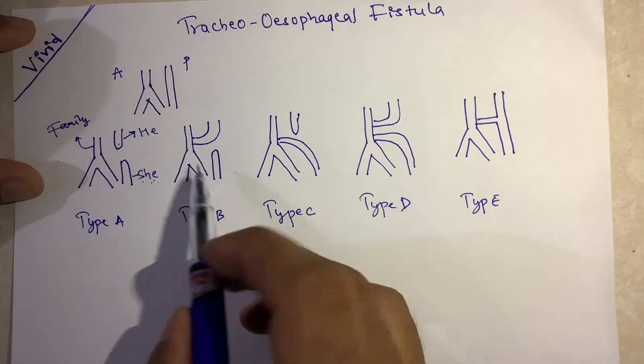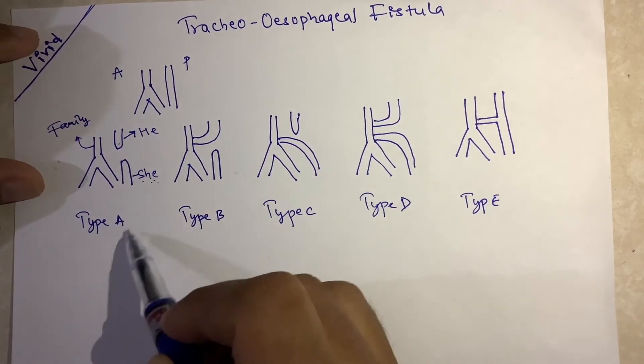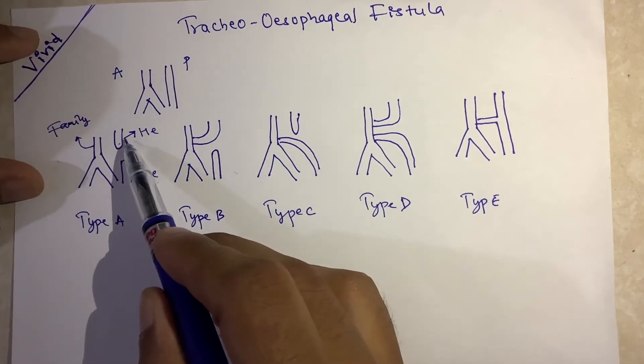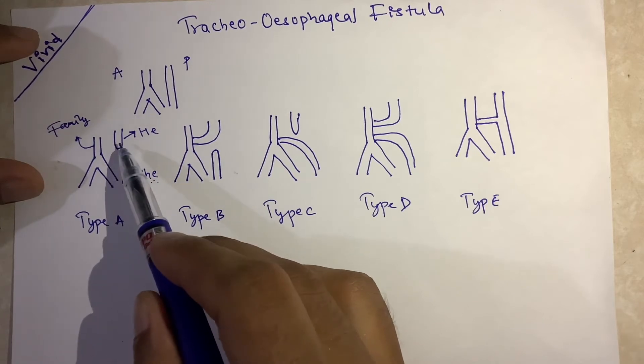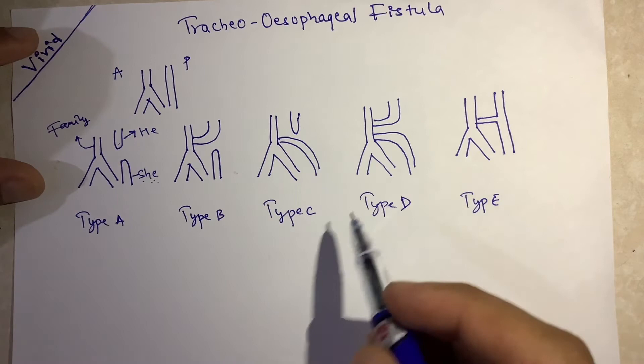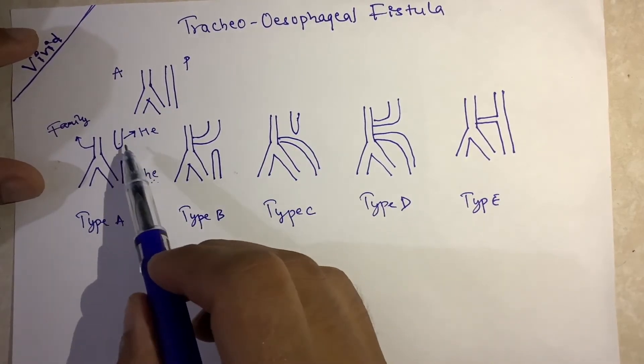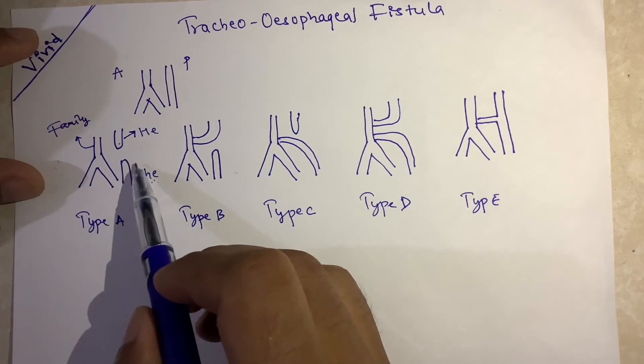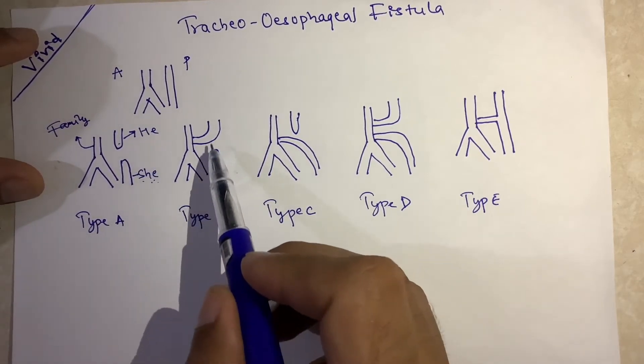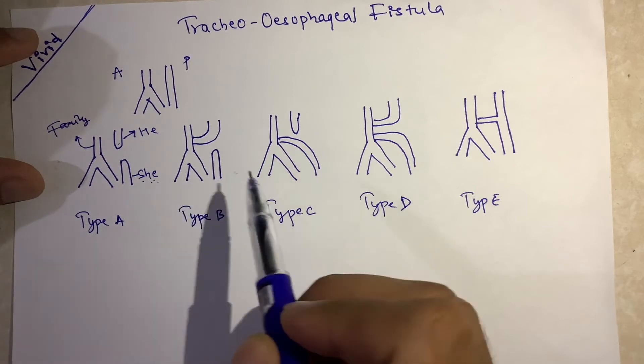So at first, in type A, the girl and boy meet each other. They meet each other but they don't know each other so they are blindfolded. In type B, when they meet each other, they like each other, so they have to talk about the relationship to their family.